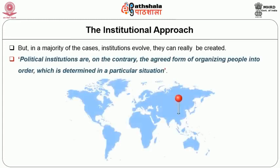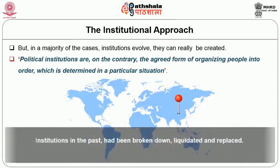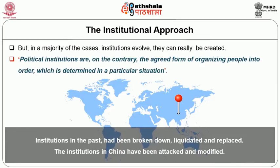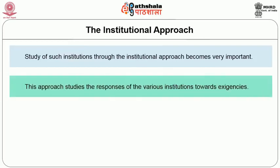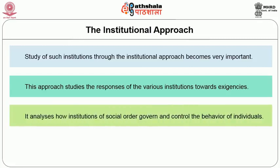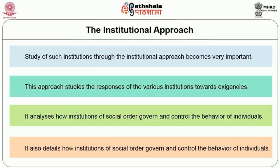Political institutions are, on the contrary, the agreed form of organizing people into order, which is determined in a particular situation. In countries like China, institutions in the past had been broken down, liquidated and replaced — the institutions in China have been attacked and modified. Study of such institutions through the institutional approach becomes very important. This approach studies the responses of the various institutions towards exigencies. It analyses how institutions of social order govern and control the behavior of individuals.